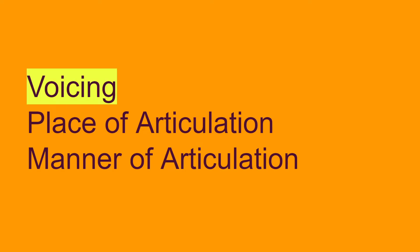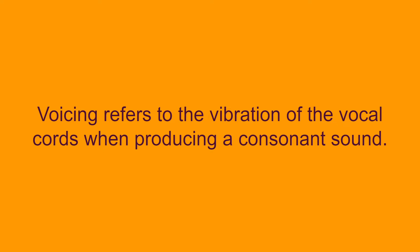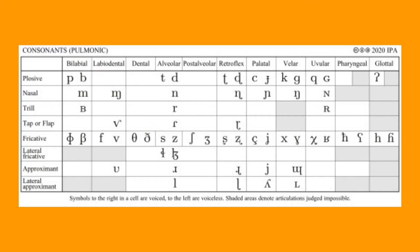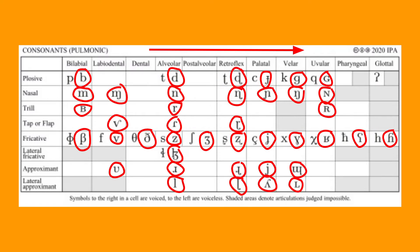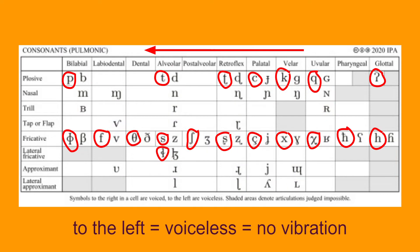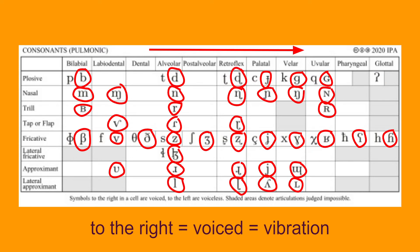Let's start with voicing. Voicing refers to the vibration of the vocal cords when producing a consonant sound. Notice that in all these cells, we have symbols that lean towards the left and symbols that lean towards the right. The ones leaning towards the left are voiceless, meaning that there is no vibration in the vocal cords, and the ones leaning towards the right are voiced, meaning that there is vibration in the vocal cords.